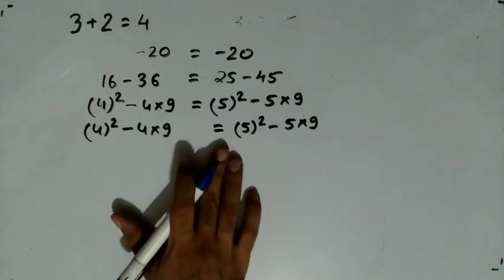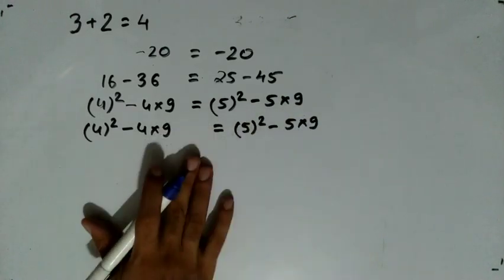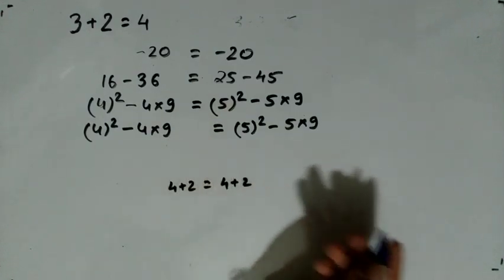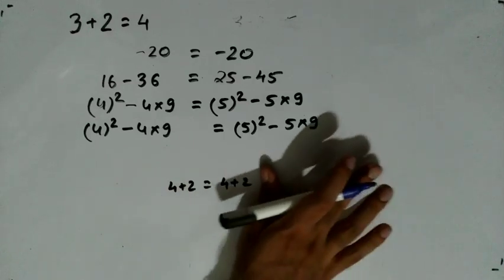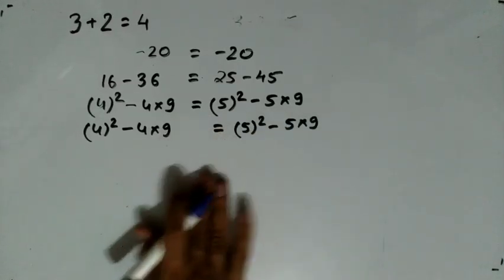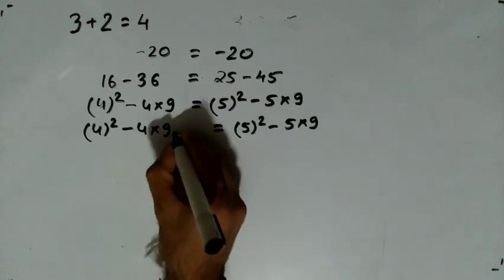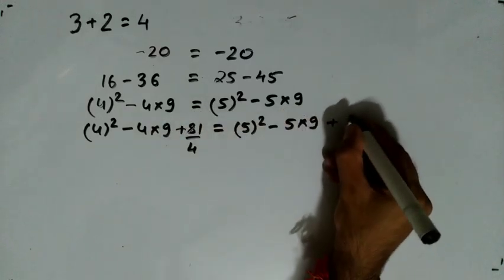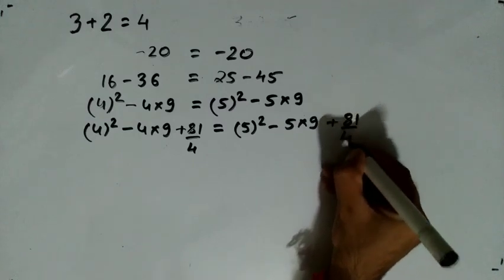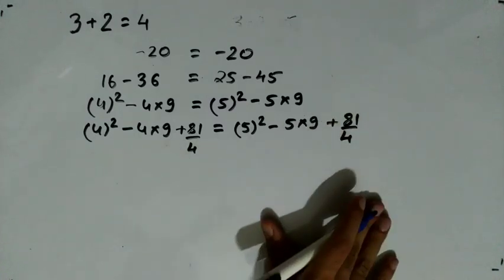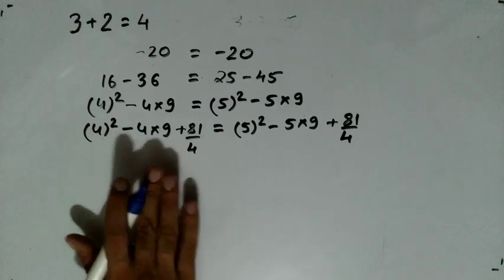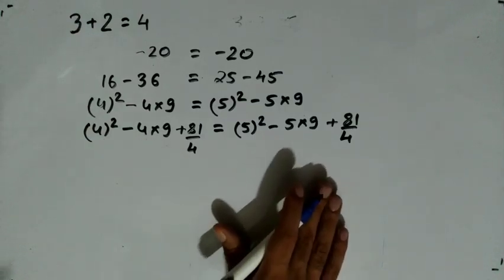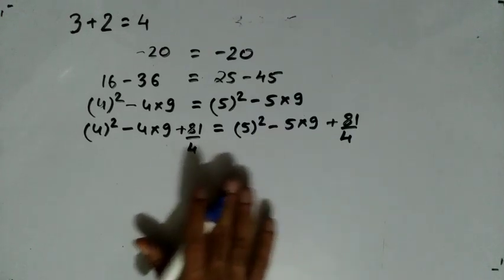If I add the same quantity to both sides — if 4 equals 4, I add 2, then 6 equals 6 — there is no problem. So I will add 81 upon 4 to both sides: 4 squared minus 4 into 9 plus 81 upon 4 equals 5 squared minus 5 into 9 plus 81 upon 4. There is no mathematics rule break.